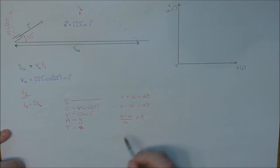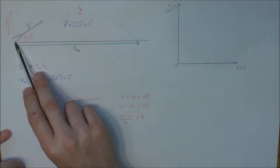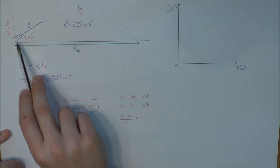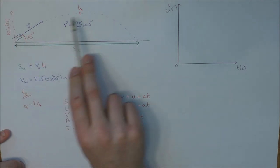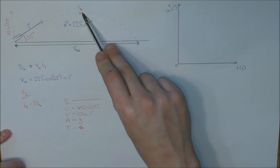So I'm going to say V minus U equals A T, and therefore V minus U over A equals T. Now that is going to be T_H. That's time from the velocity V sine 35 at the beginning to the velocity at time T_H, which is zero meters per second.